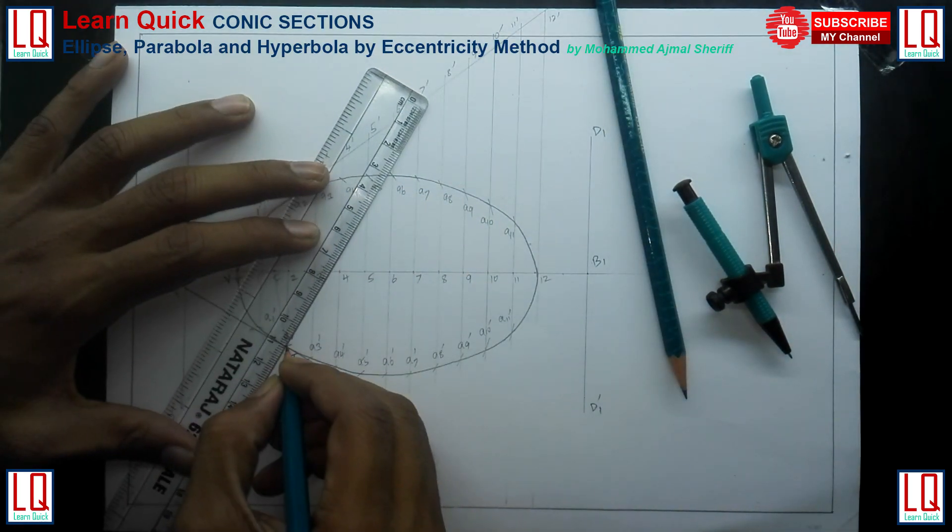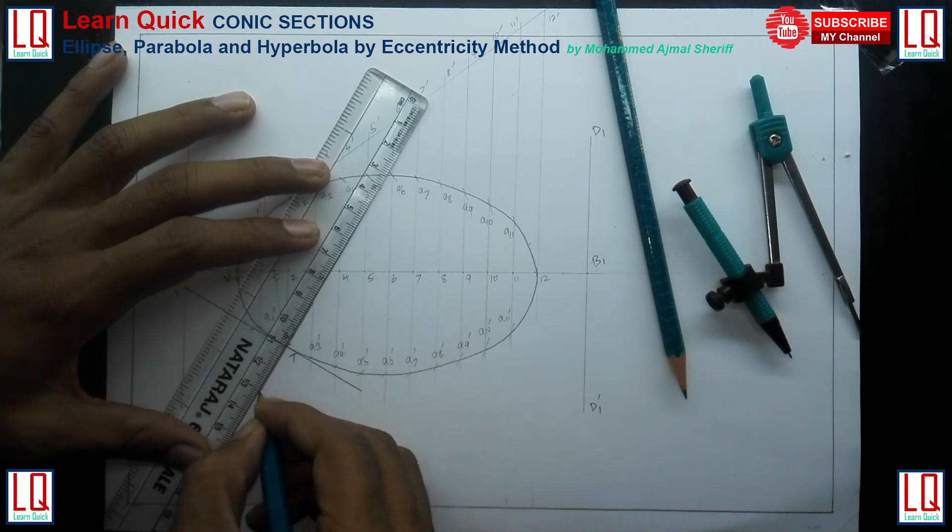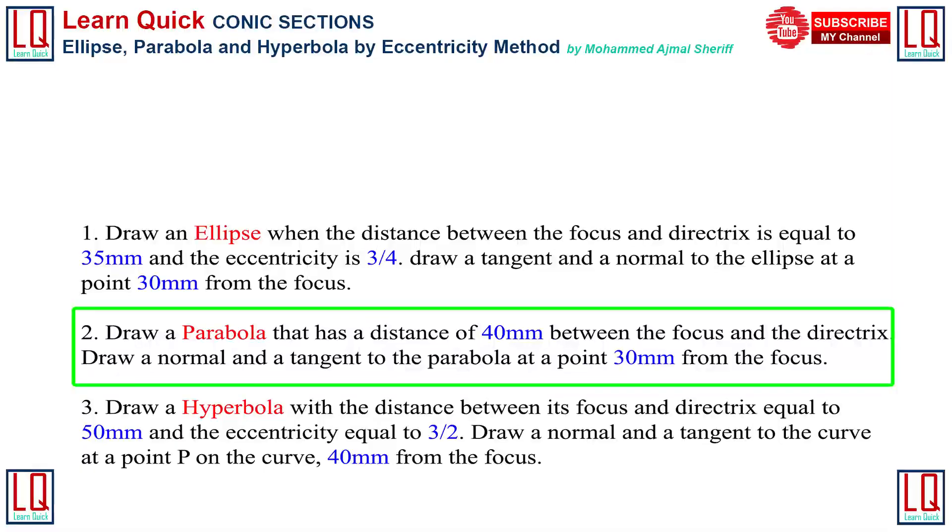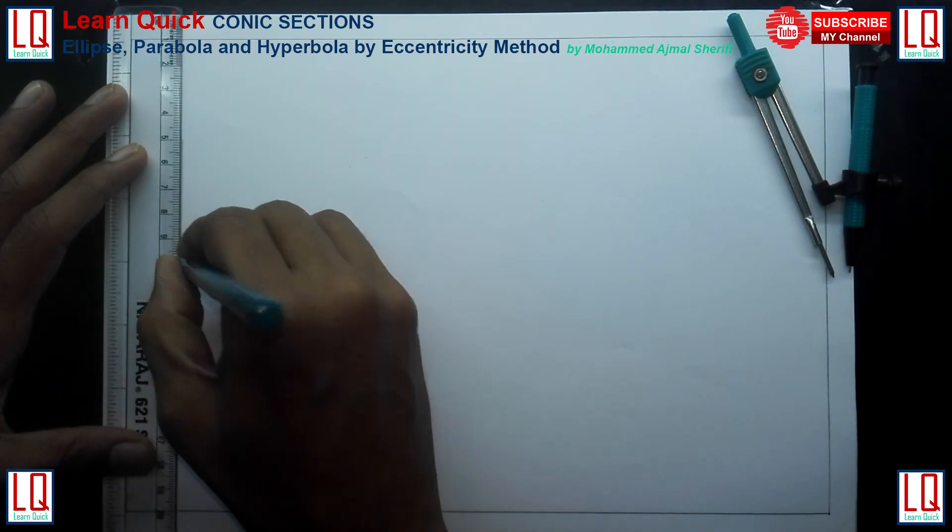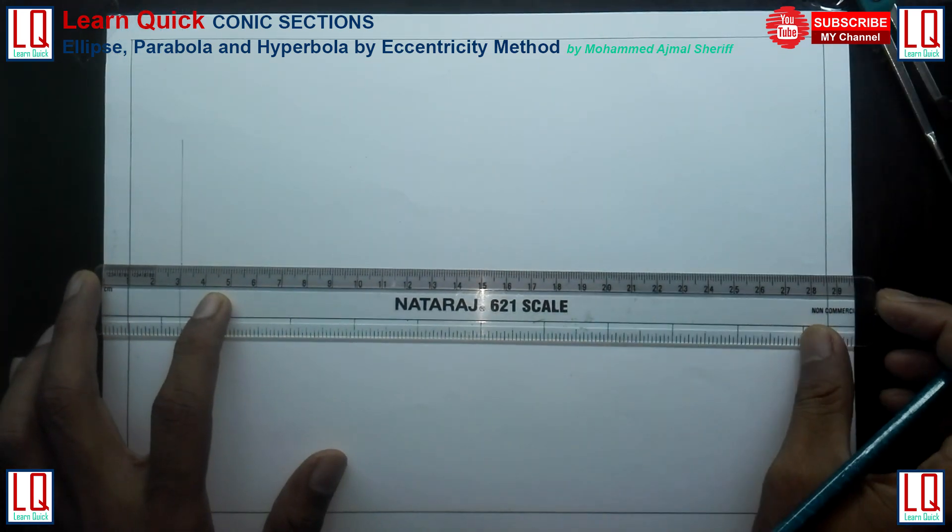Draw a perpendicular line to the tangent at the point to obtain normal. In case of parabola, the distance VF and VB is equally distributed which is 20 mm each. Follow the same eccentricity method which we use to draw an ellipse. Unlike the ellipse is a closed curve, the parabola is an open curve. So it is enough to take few arbitrary points to draw the vertical lines.